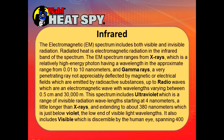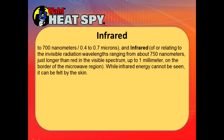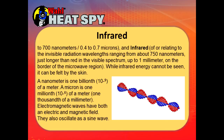The spectrum includes ultraviolet, which is a range of invisible radiation wavelengths starting at 4 nanometers — a little longer than x-rays — and extending to about 300 nanometers, which is just below violet, the low end of visible light. Visible light, discernible to the human eye, spans 400 to 700 nanometers, or 0.4 to 0.7 microns. Infrared relates to invisible radiation wavelengths ranging from about 750 nanometers — just longer than red in the visible spectrum — up to 1 millimeter on the border of the microwave region. While infrared energy cannot be seen, it can be felt by the skin. A nanometer is one billionth of a meter; a micron is one millionth of a meter, or one thousandth of a millimeter. Electromagnetic waves have both an electric and magnetic field, and they also oscillate in a sine wave.